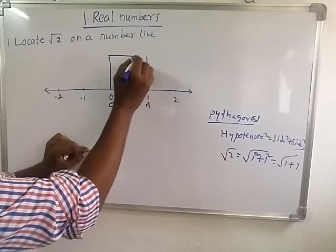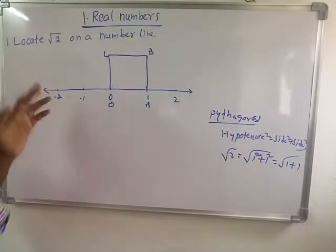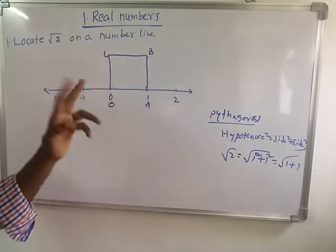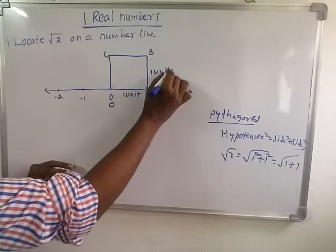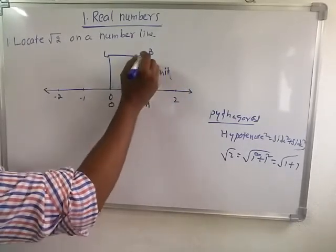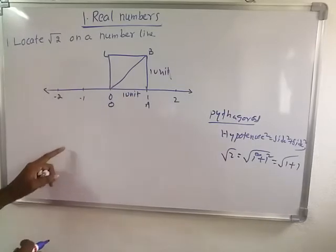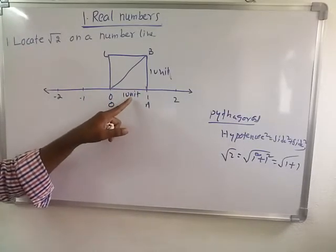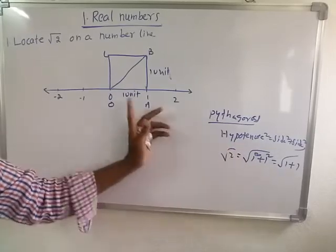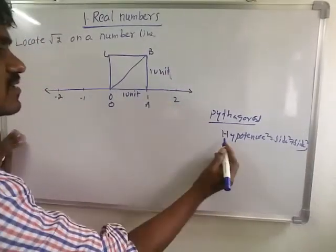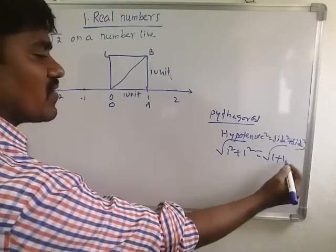We draw a square OABC with side one unit. Now we draw diagonal OB. According to Pythagoras' theorem, one squared plus one squared gives us the hypotenuse, and the diagonal OB has length square root of two.